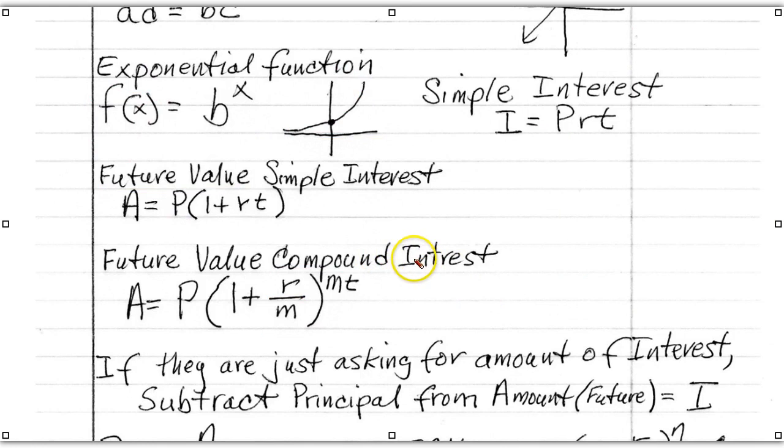If they're asking for future value, that's A. But sometimes they are asking for amount of interest. Now, how do you find that? Well, you subtract your original principal from the future value, and that will give you interest.